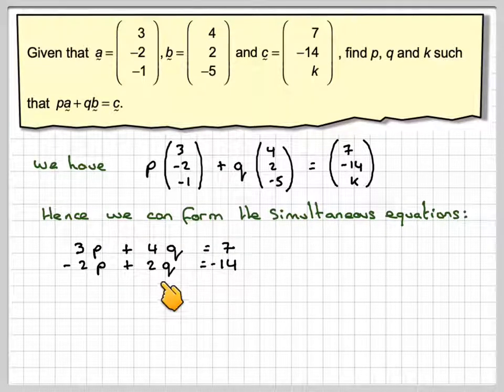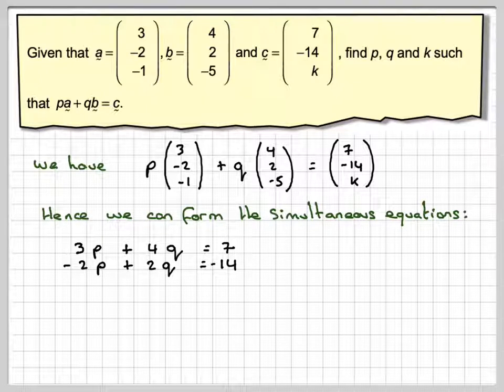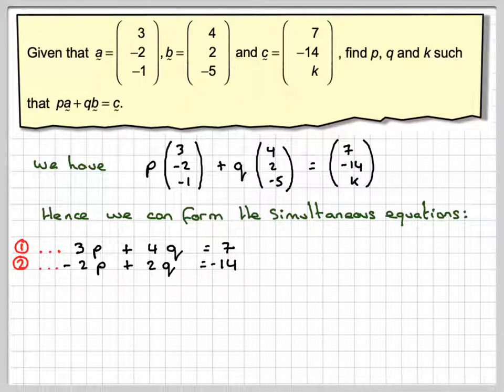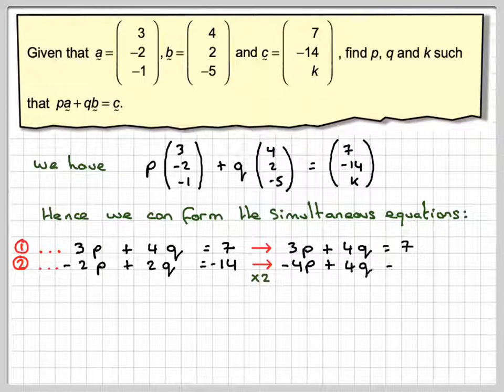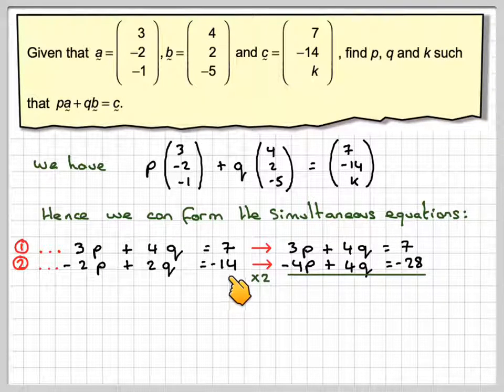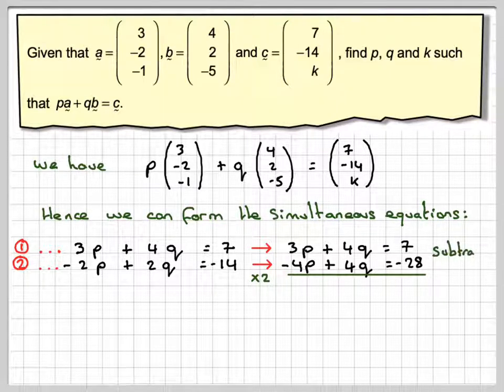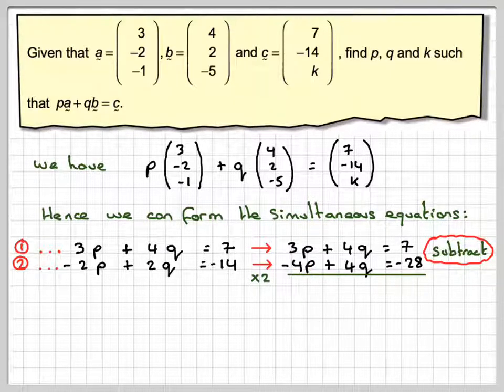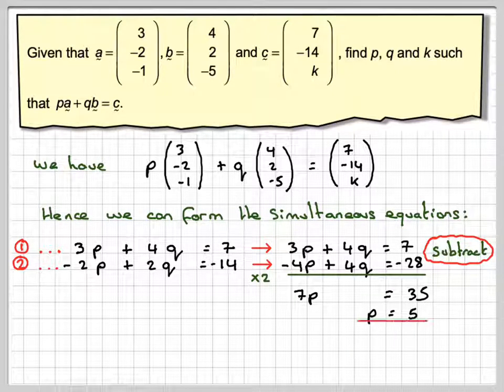We just solve those simultaneously. So what I'm going to do is multiply the bottom one, equation 2, by 2. Make sure you multiply everything, including the -14 at the end. And then all I need to do is subtract. So 3 minus -4 is 7p, 4q minus 4q gives me nothing, 7 minus -28 gives me 35, and that's going to give me that p = 5.